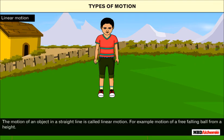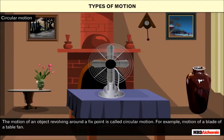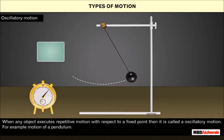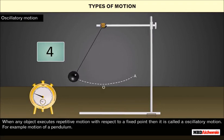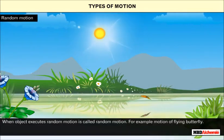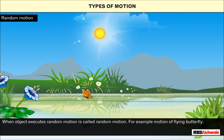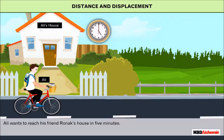Types of motion: the motion of an object in a straight line is called linear motion. The motion of an object revolving around a fixed point is called circular motion — for example, the blade of a table fan. The motion of an object completing one revolution in a certain time interval is called periodic motion — for example, the hands of a clock. When an object executes repetitive motion with respect to a fixed point, it is called oscillatory motion — for example, the motion of a pendulum.